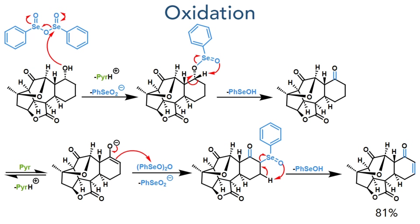Turning their attention to the remaining hydroxyl group, they then carried out an oxidation using phenyl selenium anhydride. This is attacked by the hydroxyl group forming a selenoester. This can undergo an intramolecular hydride abstraction, eliminating phenyl selenol and forming a ketone. Formation of an enolate, promoted by the presence of pyridine in solution, generates a nucleophile that can then attack another equivalent of the phenyl selenium anhydride, and once again another hydride abstraction occurs, eliminating selenol to form the target enone in an 81% yield.